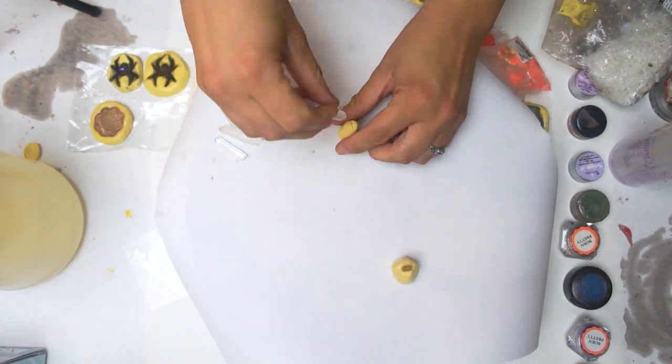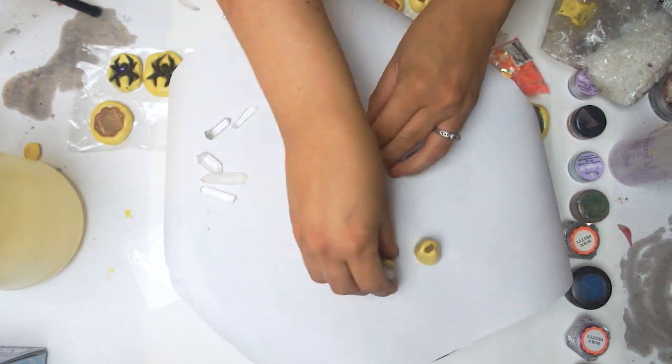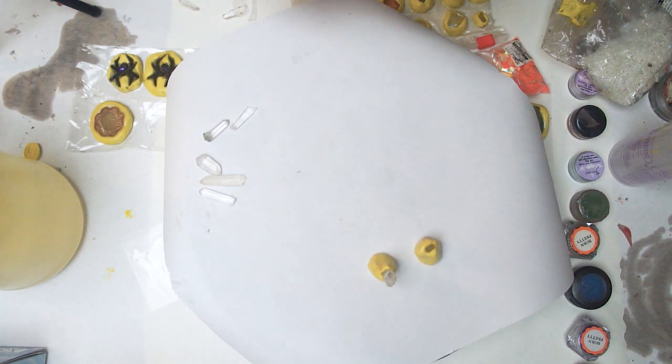I create a 1 to 1 ratio of the putty and shape it around each of the crystals. I want to make sure that the bottom of it is flat.